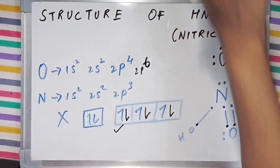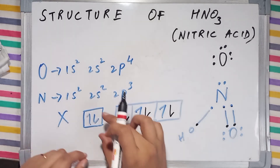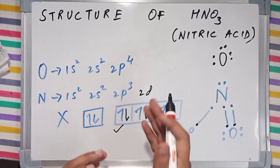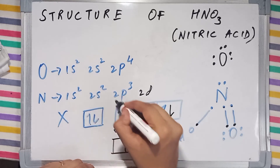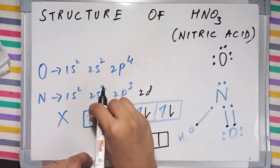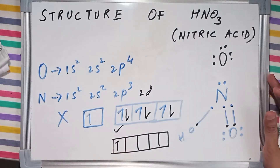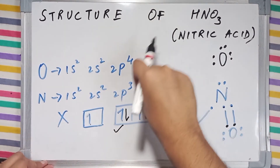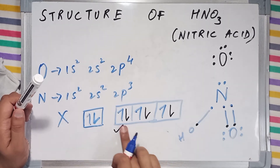Since this orbital of nitrogen is now filled, and nitrogen doesn't have a 2d subshell — if it did have a 2d subshell, it would have five vacant orbitals and electrons could jump there, allowing it to make two more bonds for a total of five. But since it doesn't have a vacant 2d subshell and has a completely filled 2s subshell, that is not possible.